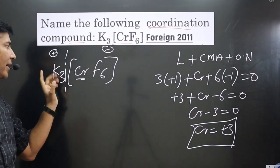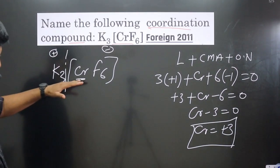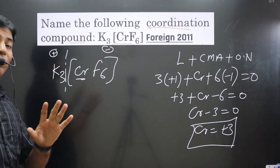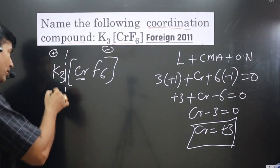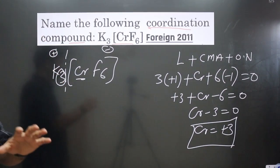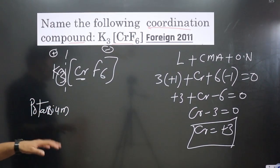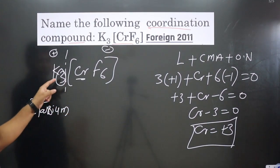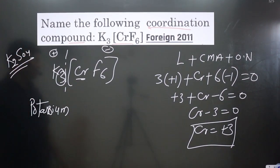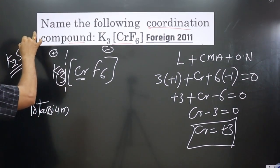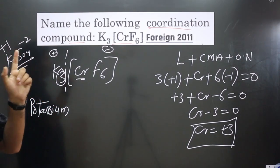When naming, we write the cationic part first, then the anionic complex. For the counter ion, we ignore the numerical prefix — we do not say 'tripotassium,' just 'potassium.' These numbers arise only from charge balancing. For example, K₂SO₄ is called potassium sulfate, not dipotassium sulfate, because the 2 comes from balancing the −2 charge of sulfate with +1 potassium.